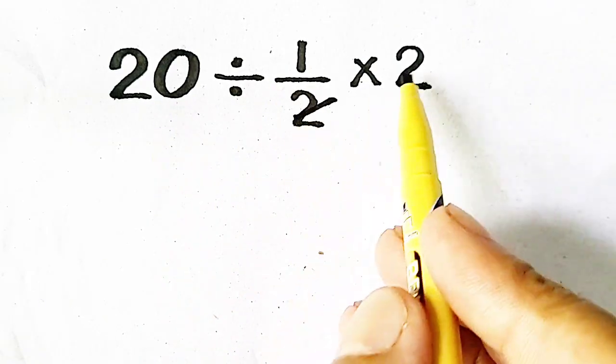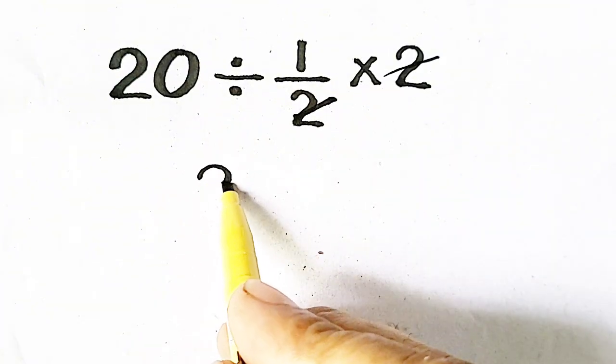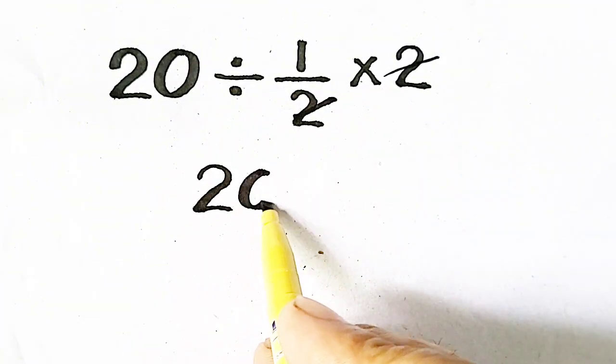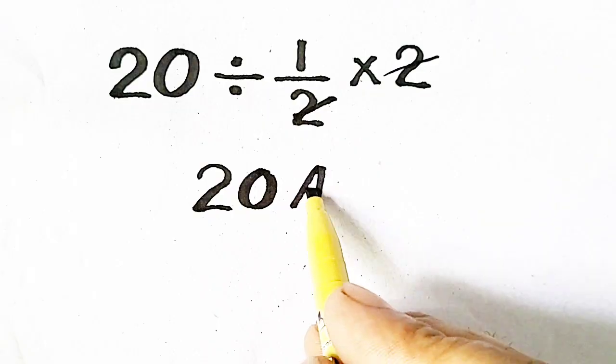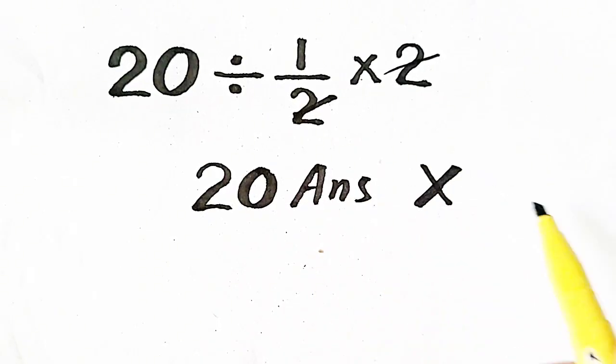So 2 is cancelled with 2 and our answer will be equal to 20. But it is wrong.